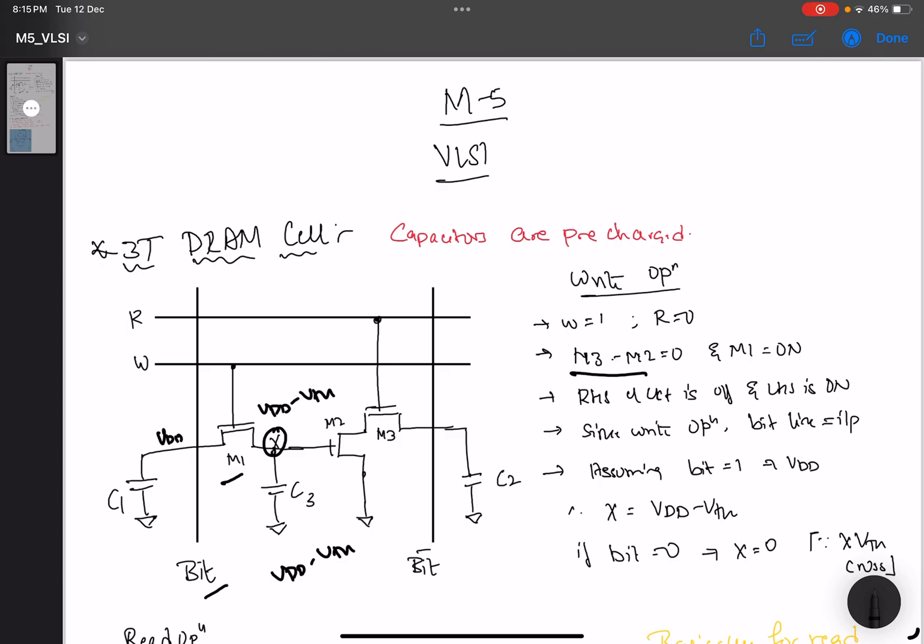But at the same time, if bit is 0, the bit line is 0. If there is no input given, then X will be 0. This is because it is unable to cross the threshold voltage only, and therefore X will be equal to 0.